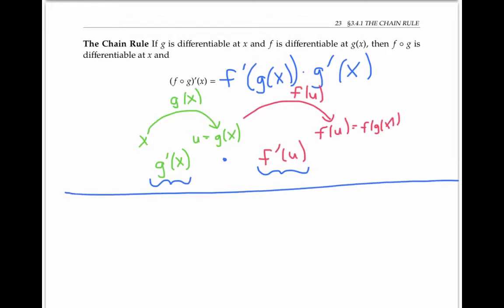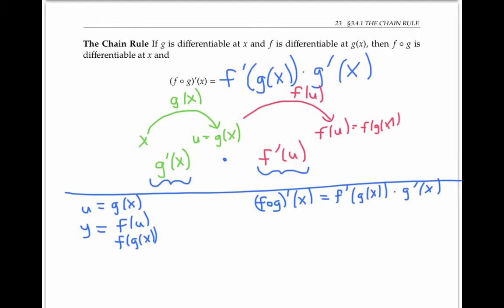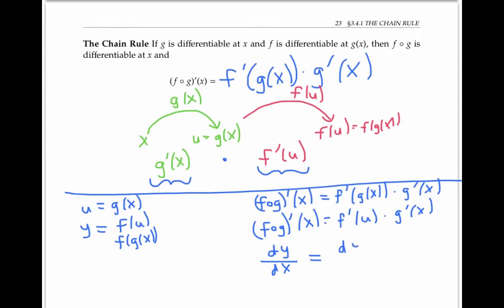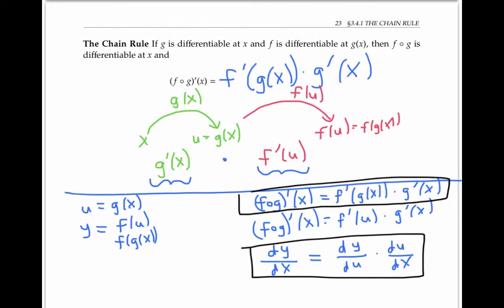You may sometimes see the chain rule written in Leibniz notation — that is, the dy/dx notation. Let u represent g of x as before, and let y be f of u, in other words f of g of x. In Leibniz notation, the left side is dy/dx, f prime of u is dy/du, and g prime of x is du/dx. So we have another form of the chain rule: dy/dx equals dy/du times du/dx. Both of these forms you'll see frequently in the examples to follow.